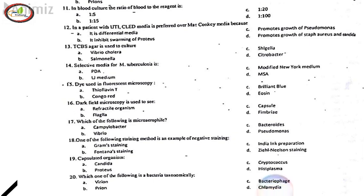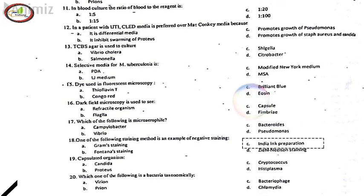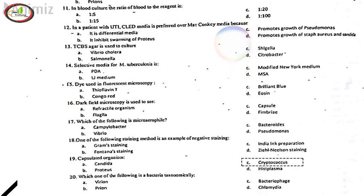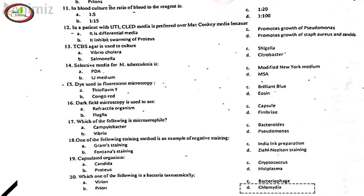18. Which one of the following staining methods is an example of negative staining? C. India ink preparation. 19. Capsulated organism, C. Cryptococcus. 20. Which one of the following is a bacteria taxonomically, D. Chlamydia.